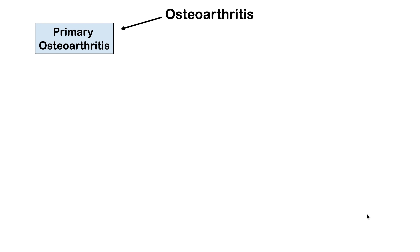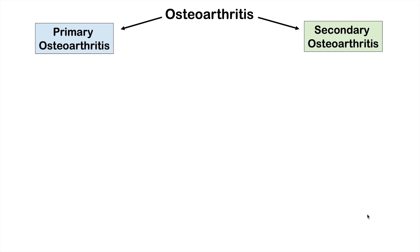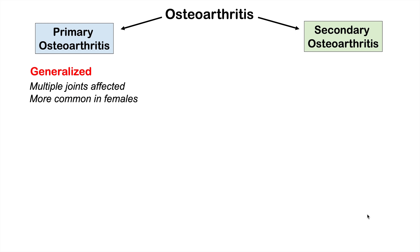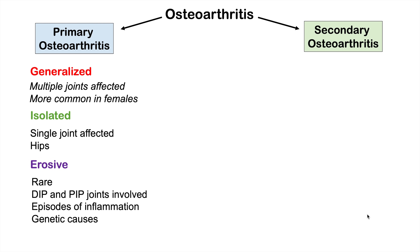There are two major types of osteoarthritis. Primary osteoarthritis, which is the focus of this lesson, includes a generalized subtype affecting multiple joints (more common in female patients), an isolated subtype where a single joint — often the hip — is affected, and erosive osteoarthritis, a rare type where the DIP and PIP joints of the hands are affected, often with episodes of inflammation and a genetic cause.